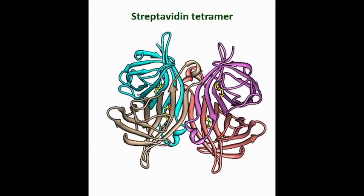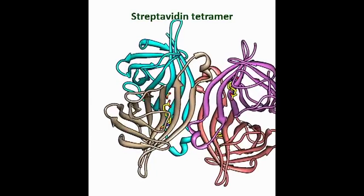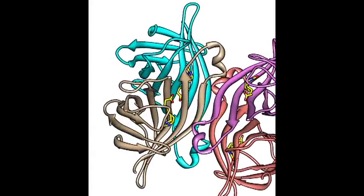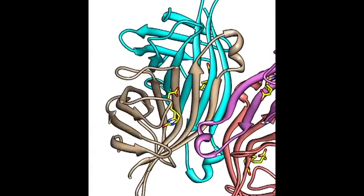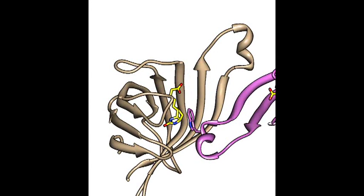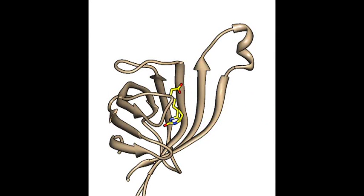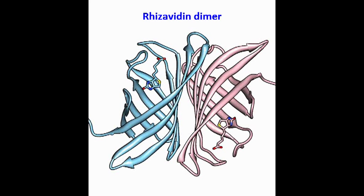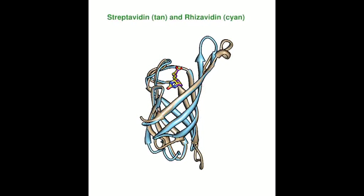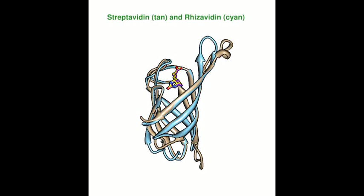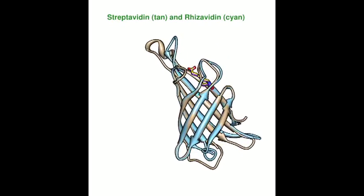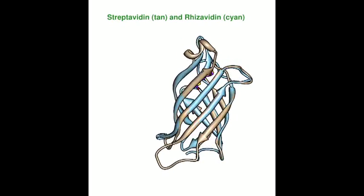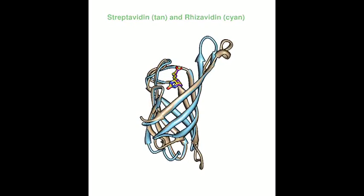The binding pocket of streptavidin consists of residues from multiple subunits, including a tryptophan that forms a hydrophobic lid over bound biotin, which is missing in the monomer binding site. However, there are streptavidin homologues that form natural structural dimers yet bind biotin with high affinity. Because their binding sites consist of residues from a single subunit, it may be possible to decouple biotin interaction from subunit association.